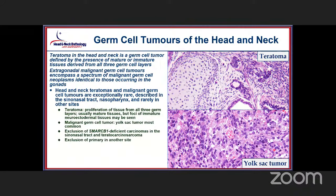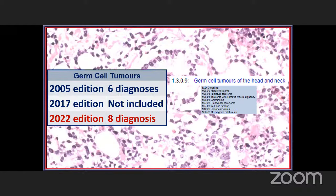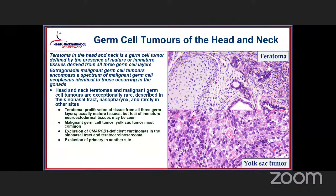Regarding germ cell tumors — they were not included in 2017 but have now been added back in as a single chapter covering the entire teratoma category. There is nothing particularly different about teratomas in the head and neck. Yolk sac tumors are the most common germ cell tumor, though others can be seen as well. Importantly, SMARCB1-deficient carcinomas within the sinonasal tract and teratocarcinosarcoma are not considered germ cell neoplasia. Probably the most important thing with any germ cell tumor is to recognize that they are extra-gonadal and not metastatic from another site — lesions from the mediastinum can present within the head and neck space, so full patient evaluation to exclude metastatic disease is important.